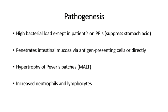In terms of the pathogenesis, patients typically ingest the organism and a high bacterial load is required, unless a patient is on an acid-suppressing drug such as a proton pump inhibitor, which reduces stomach acidity. Once the organism has entered the small intestine, it penetrates into the submucosa via antigen-presenting cells in the mucosa-associated lymphoid system, or directly into the cell itself. Typically, one sees proliferation and hypertrophy of lymphoid tissue known as the Peyer's patches, with increased amounts of lymphocytes and neutrophils.